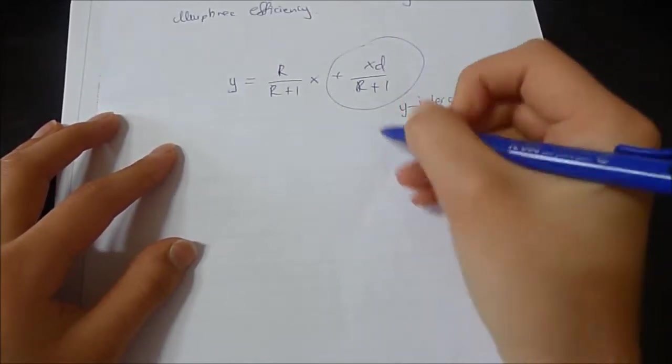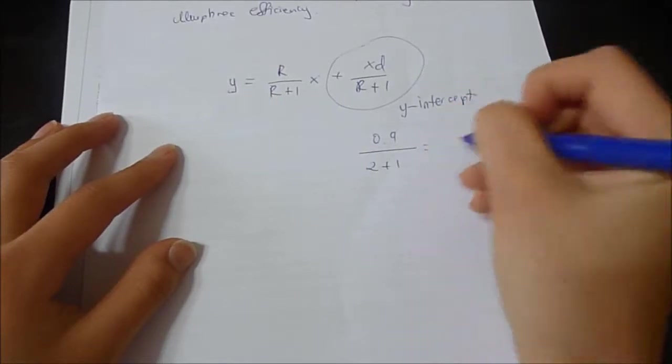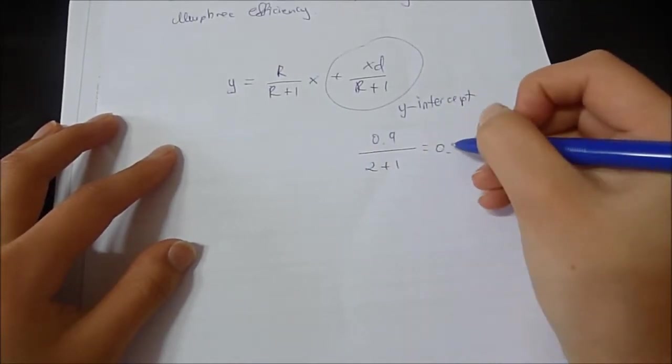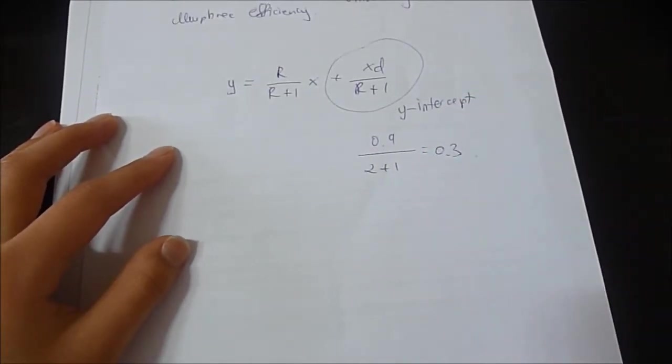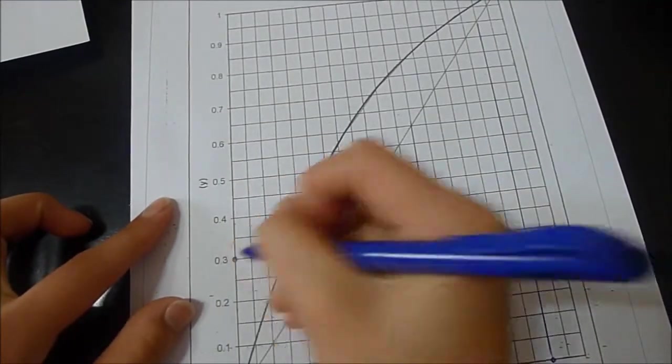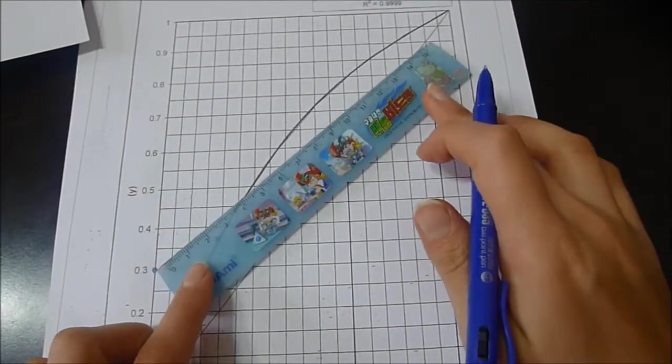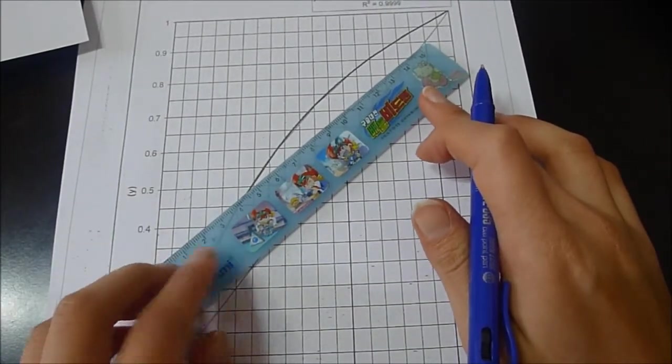XD is 0.9, R is 2, so it will be 0.3. Let's see where is 0.3, it's here. And we have to connect with the Y intercept.